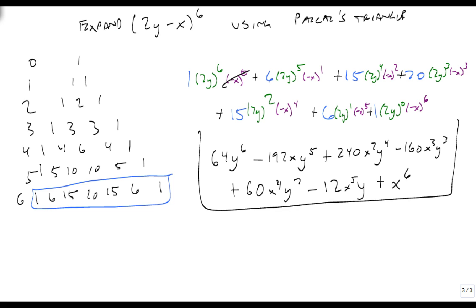Here is our expanded binomial, 2y minus x to the sixth. So we use Pascal's triangle to create the coefficients, we then plug in the terms to the right powers, raise them to that powers, multiply it all out, and we end up with our final polynomial. Thank you.